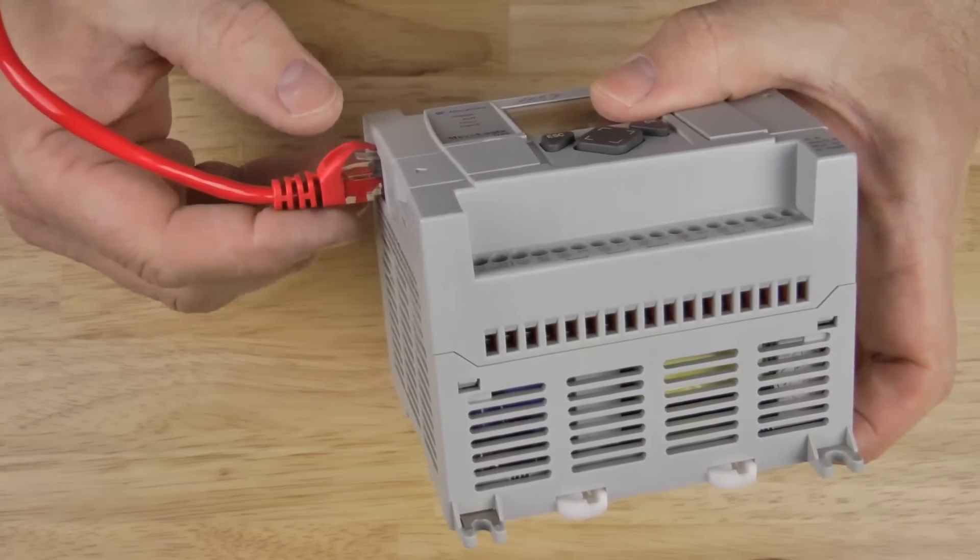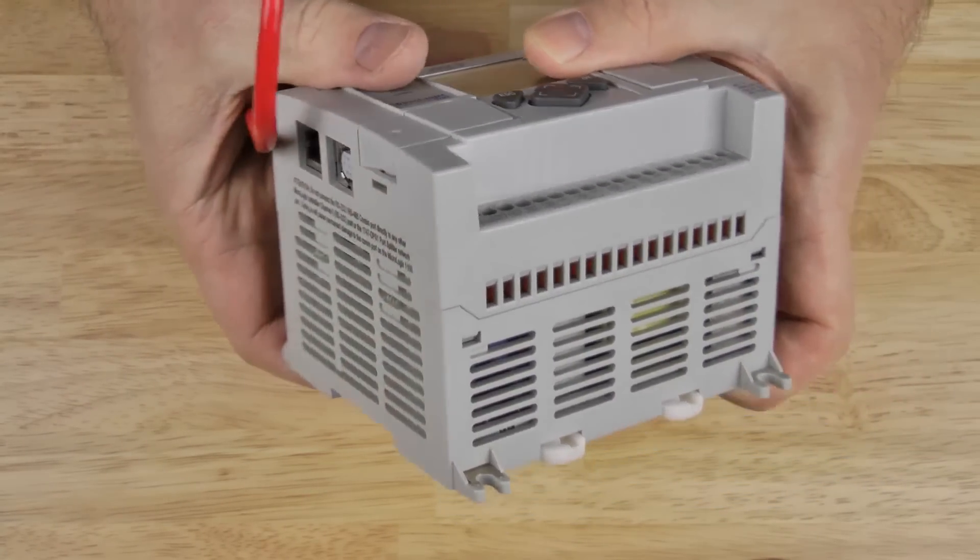Now we'll go ahead and take that Ethernet cable out, and that's it for this episode of the Automation Minute.